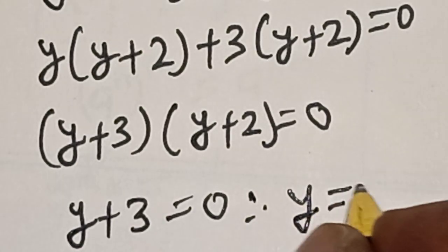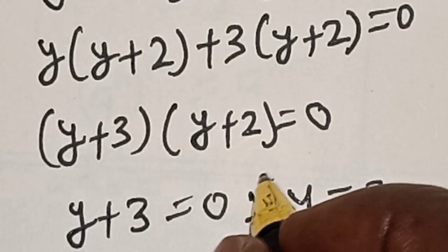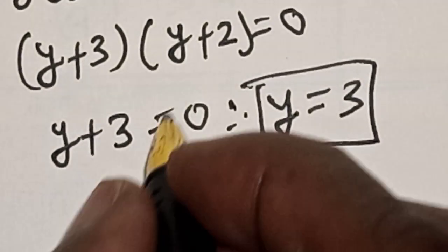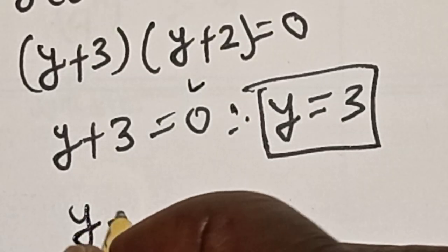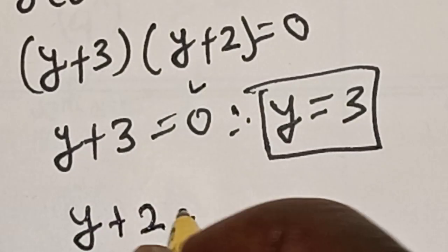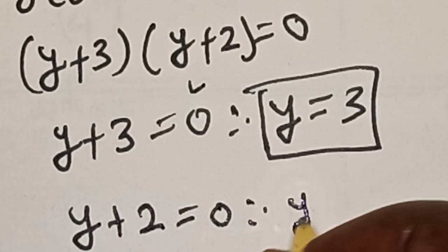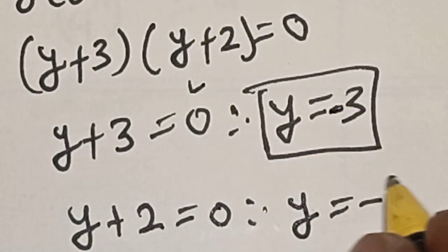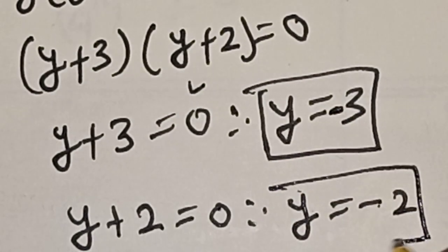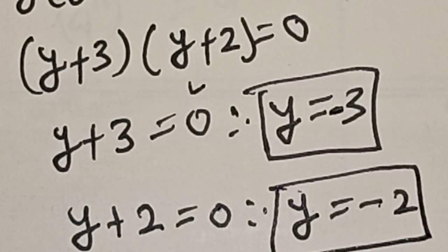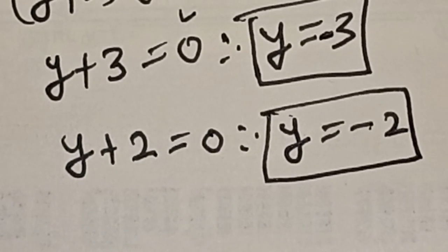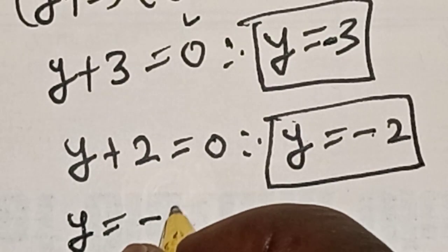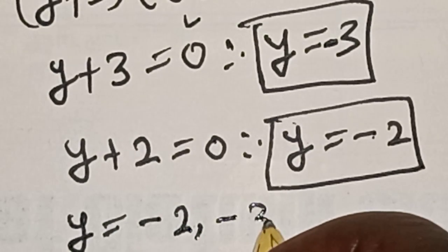Therefore y is equal to minus 3 — that is the first value of y. Or for the second case, y plus 2 is equal to 0. Therefore y is equal to minus 2 — that is the second value of y. So the value of y is equal to minus 2 and minus 3.